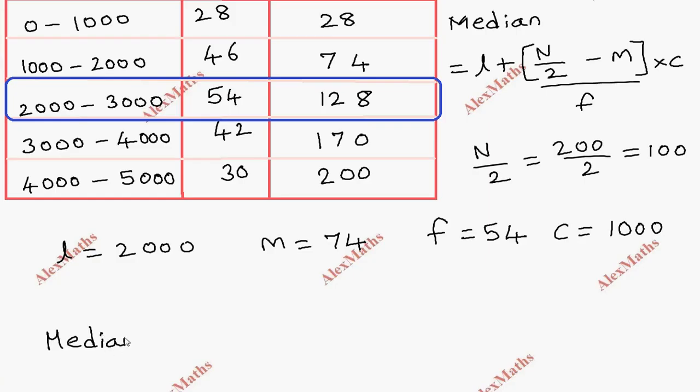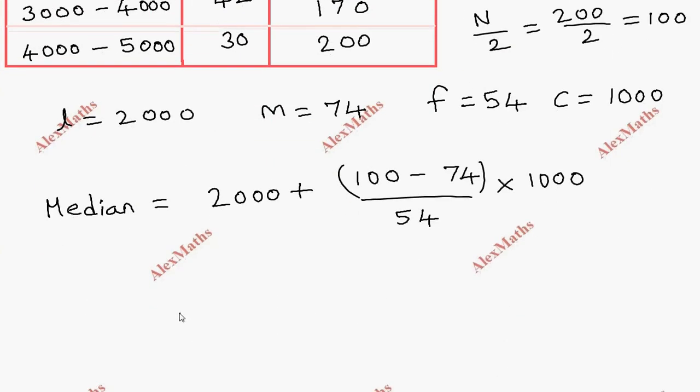Median equals L is 2000 plus N by 2 is 100 minus M is 74 divided by 54, the whole bracket into C is 1000. This simplifies to 2000 plus 26 by 54 into 1000.